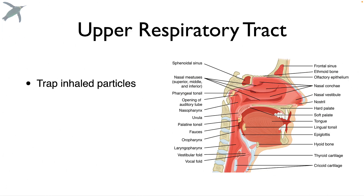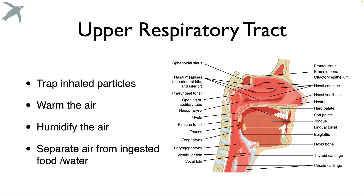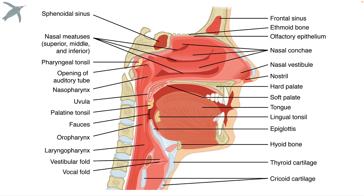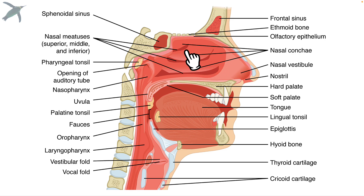The upper respiratory tract is all about trapping anything that we have inhaled that might be dangerous to us, as well as warming and humidifying the air that we breathe, and separating air from ingested food and water. Some of the notable structures here include the air coming in through the nostrils, and then being swirled around by the nasal turbinates, or nasal conchae.